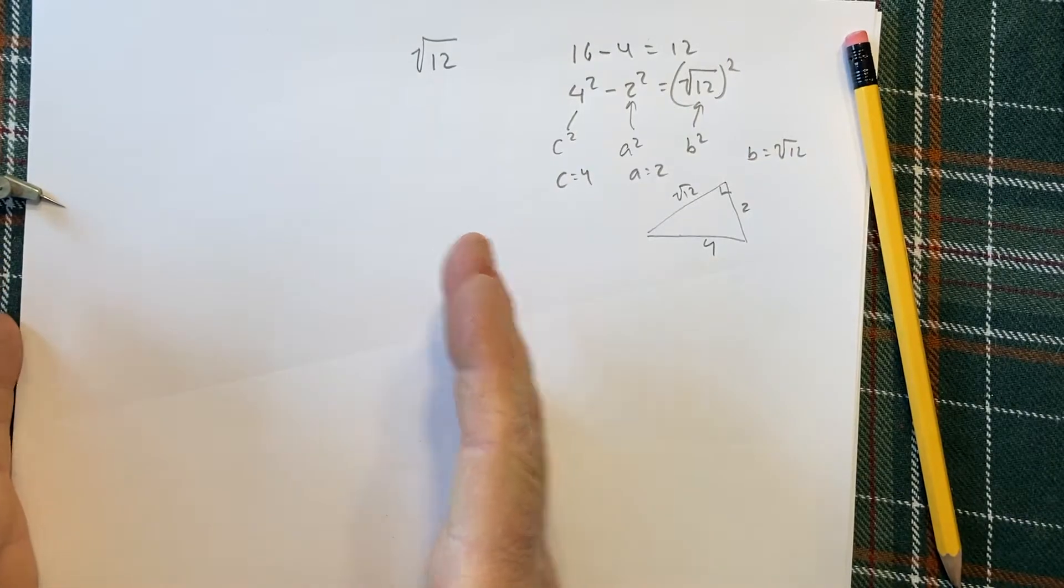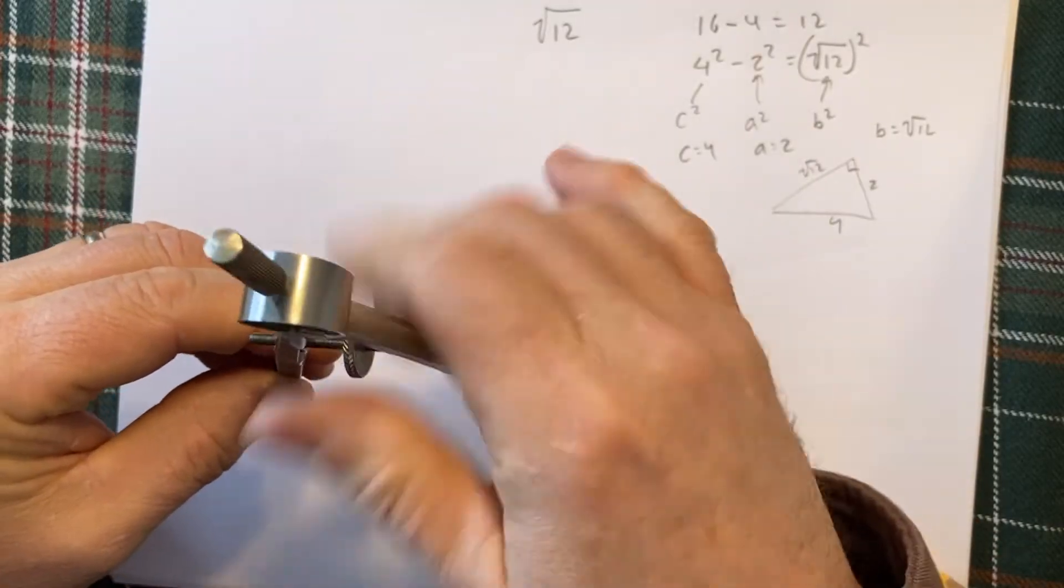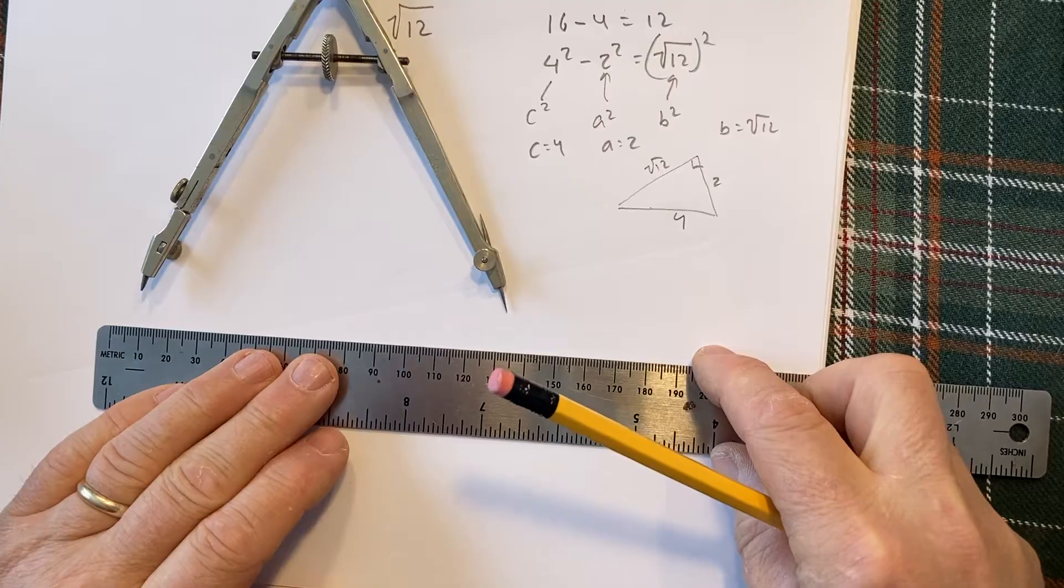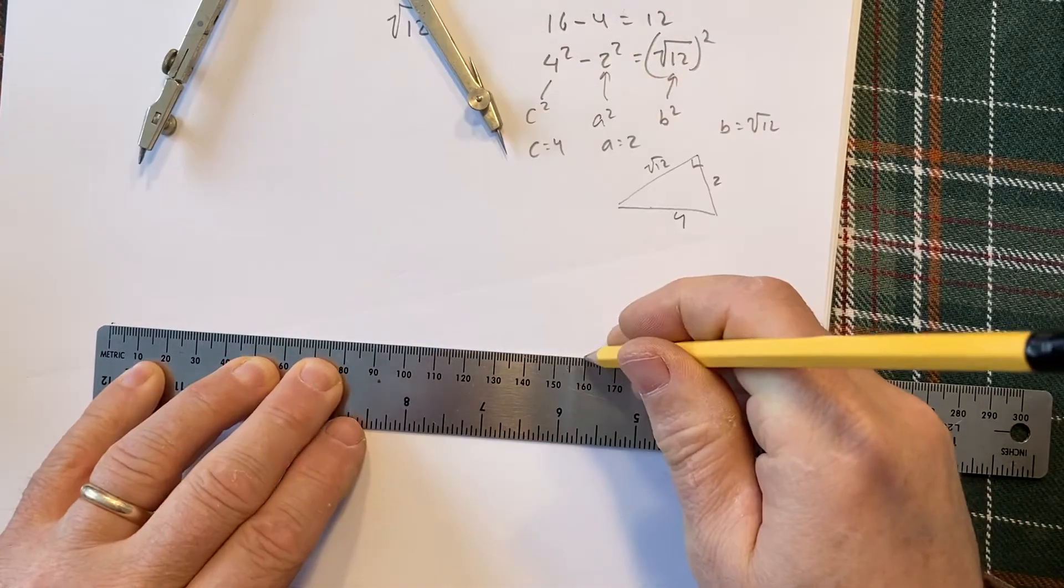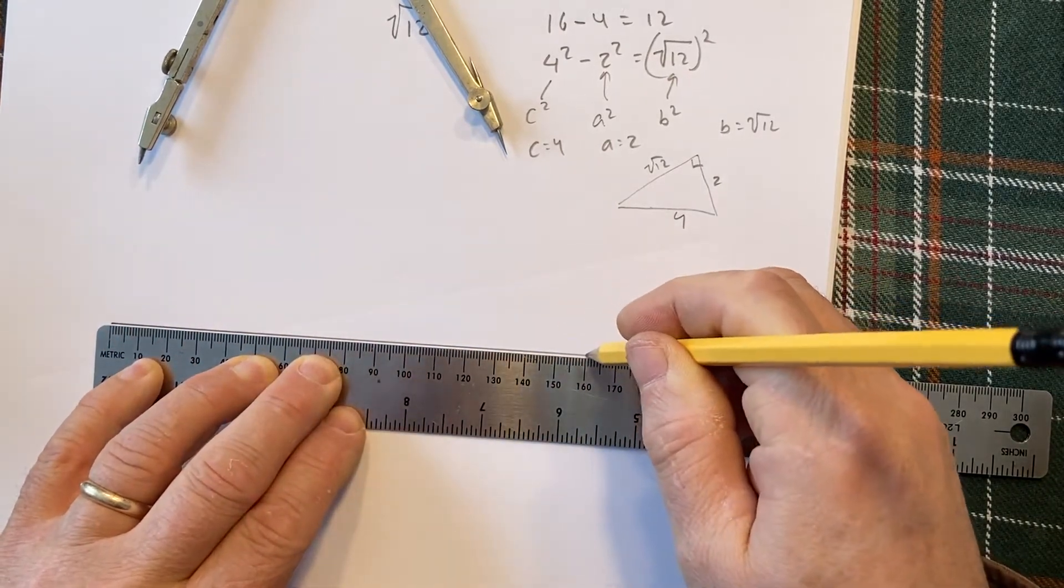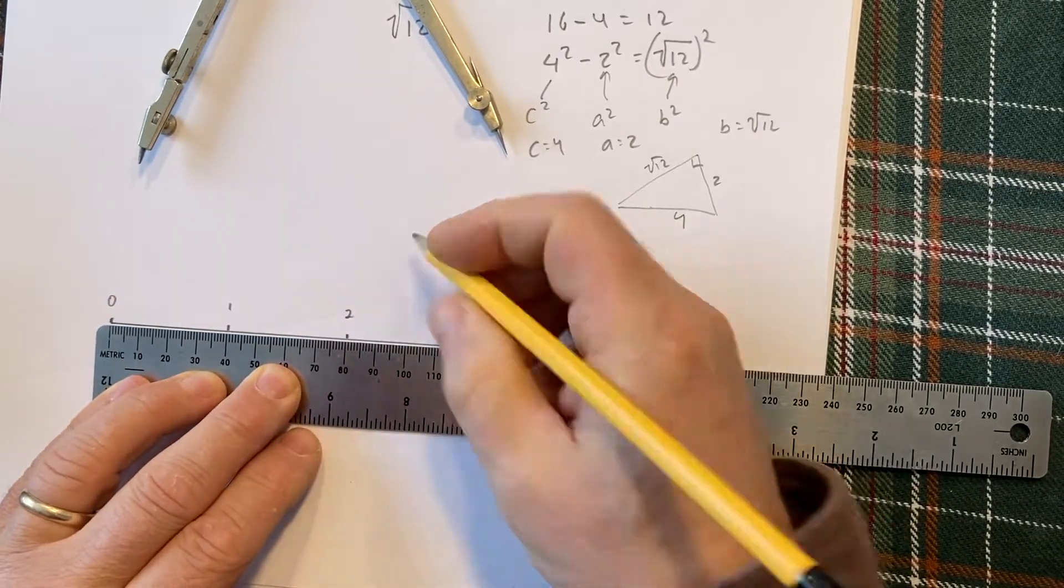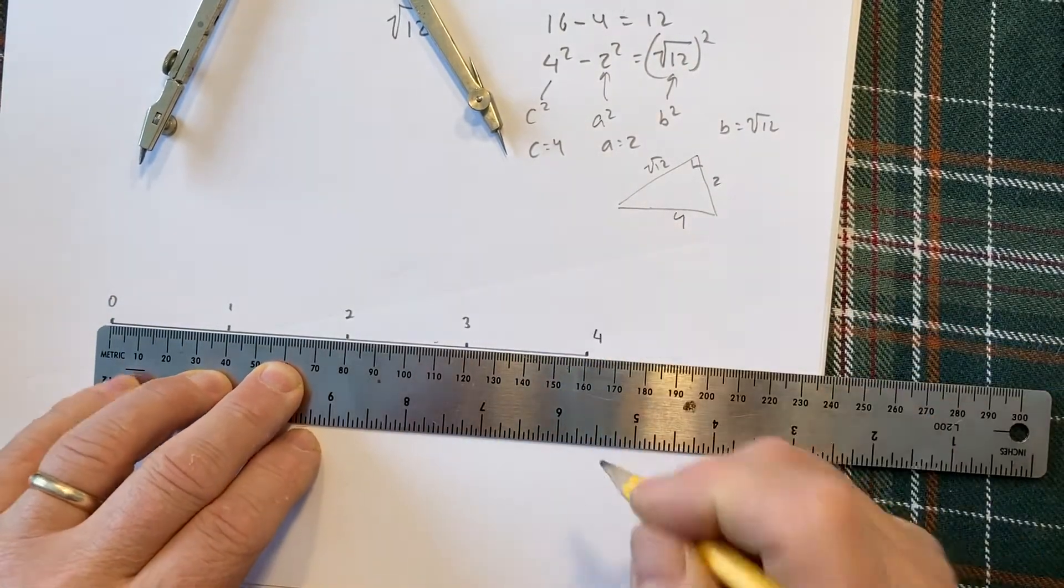I want to make my number line about that long, about half the size of the paper. Let's see how long we can make it. As long as my compass can go. This length, I want my 4 to be, what is 16? So I'll make this my 4. Every 4 centimeters is going to be 1. This is my 0. And that's my 4.